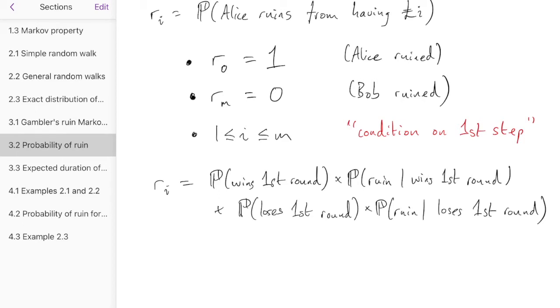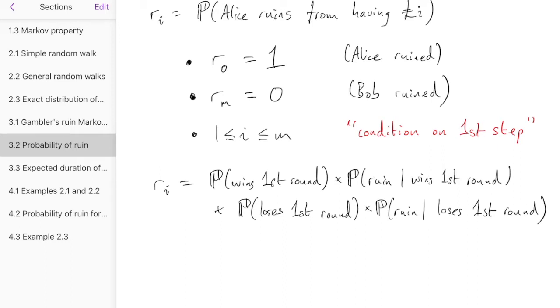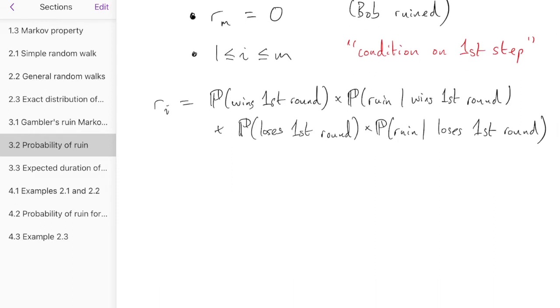So we're conditioning on what happens in the first round, and we're looking at the two different cases, multiplied by the probability of those two cases happening. Now, you might find that statement obvious, and if you do, that's fine. But if you did want to justify it using smart probability language, what you would say is that we're using the Law of Total Probability.